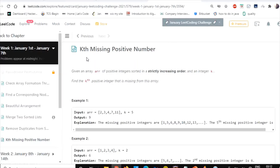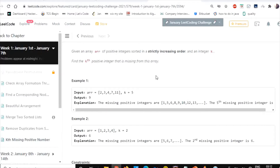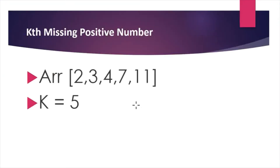Today's problem is the K Missing Positive Number. We have two inputs: the first is an array of integers in sorted order, and the second is an integer k which specifies at which position the missing number we have to return.